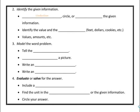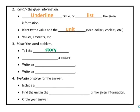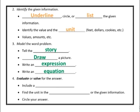Step two: identify the given information. You can underline, circle, or list it. Identify both the value and the unit — by unit I mean feet, dollars, cookies, monkeys, kittens, whatever the word problem is dealing with. Step three: model the word problem. You're telling the story through pictures, expressions, or equations. If you're a visual learner, draw a picture — it may eventually lead you to a mathematical expression or equation, which we'll look at later in the semester.